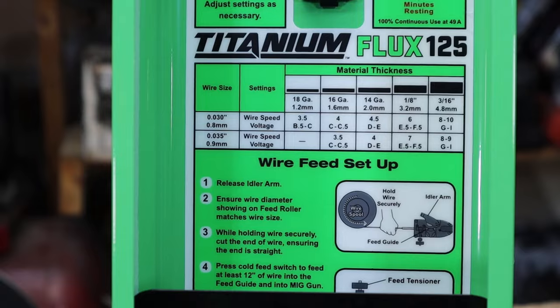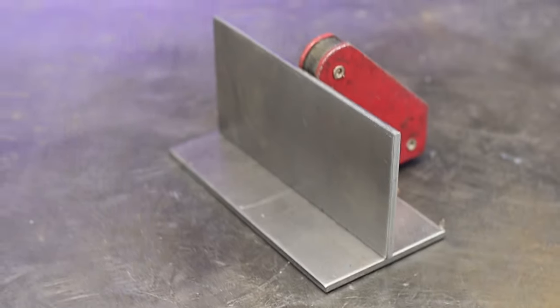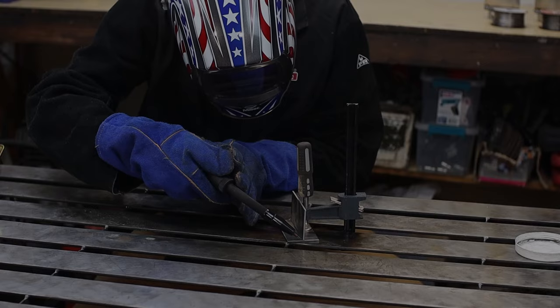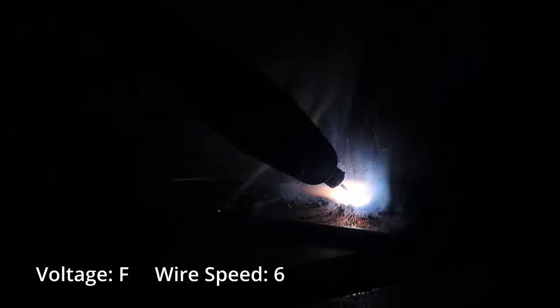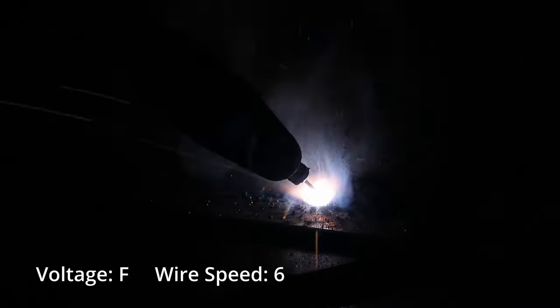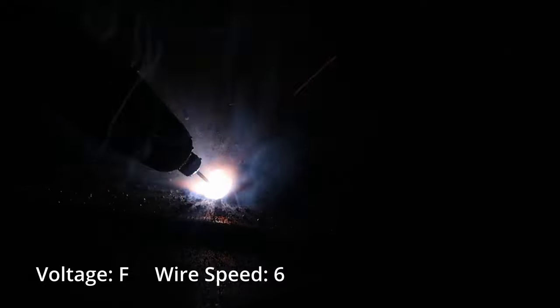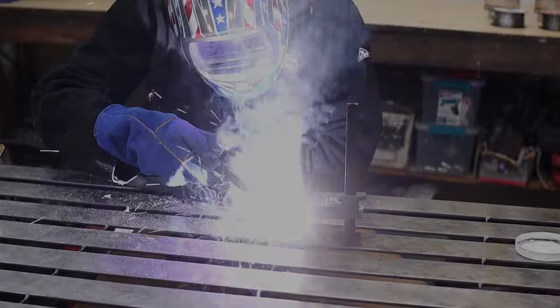Per the chart, you can do from 18 gauge up to 3/16ths. Moving on to some 1/8 inch plate. Now honestly, I don't have that many projects that require a 4 inch coupon to weld on, but these are great fillet weld practice pieces. Now the settings I'm running here are on the 6 wire speed and an E to F for the voltage.